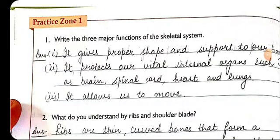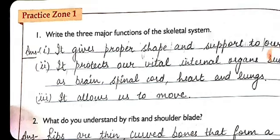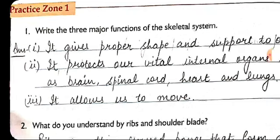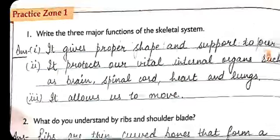Hello and welcome students. In today's video we are going to discuss the question answers of Chapter 3 of your Discovering book. We will proceed with the first practice zone. The first question is: write down any three major functions of the skeletal system.